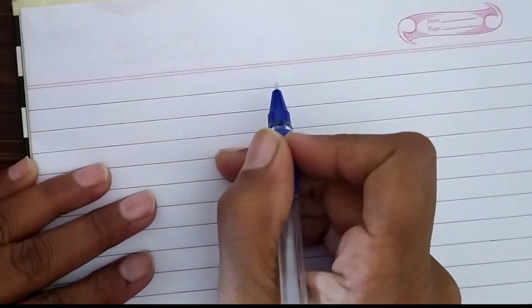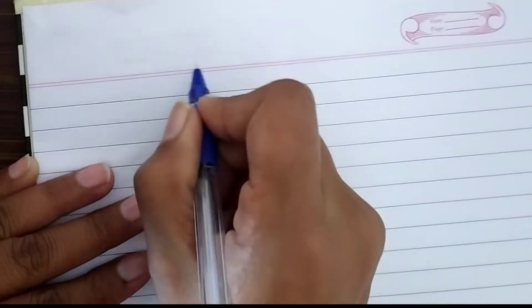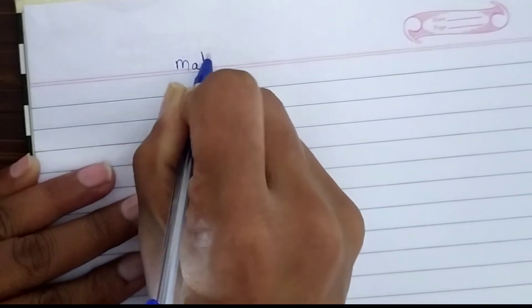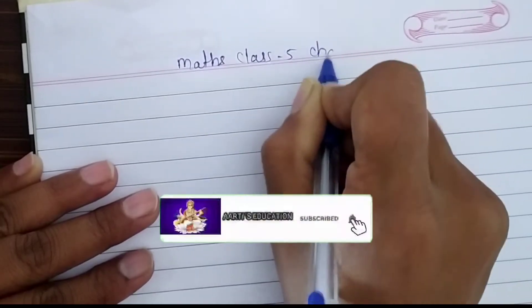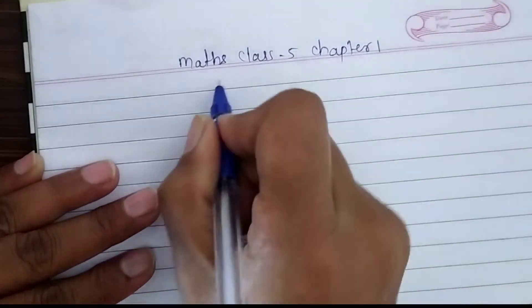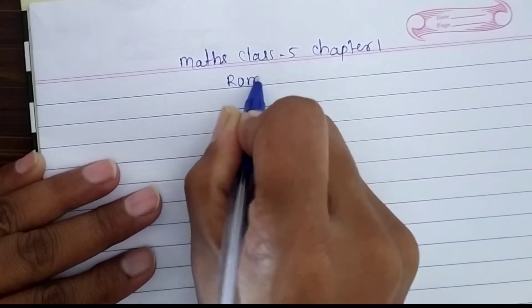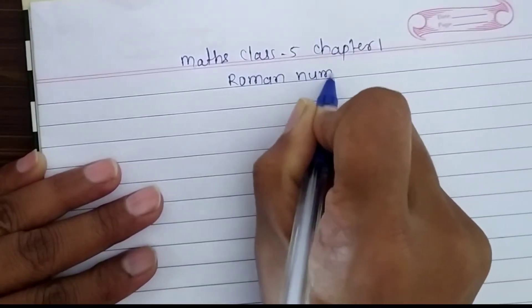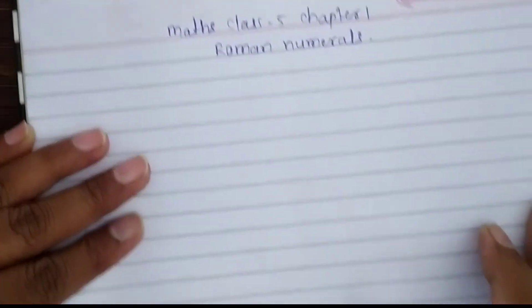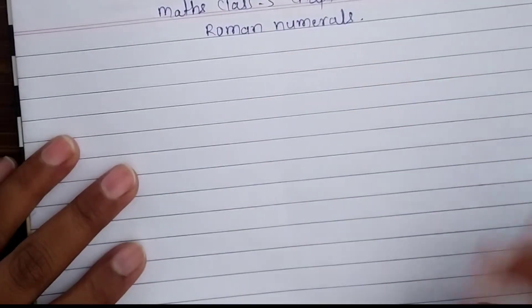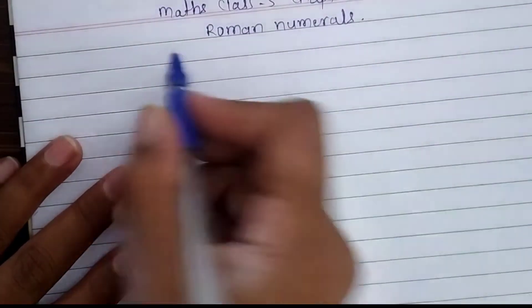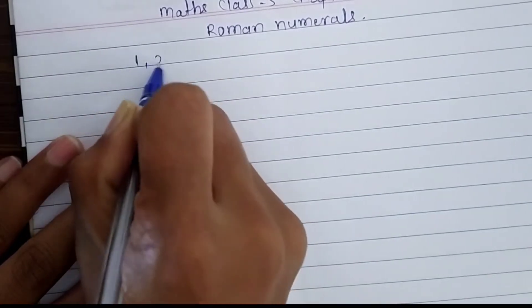Welcome to Artist Education. Please subscribe for more videos. Today we are going to learn about mathematics class 5, chapter 1: Roman numerals. We are familiar about numbers — we write them usually as 1, 2, 3.